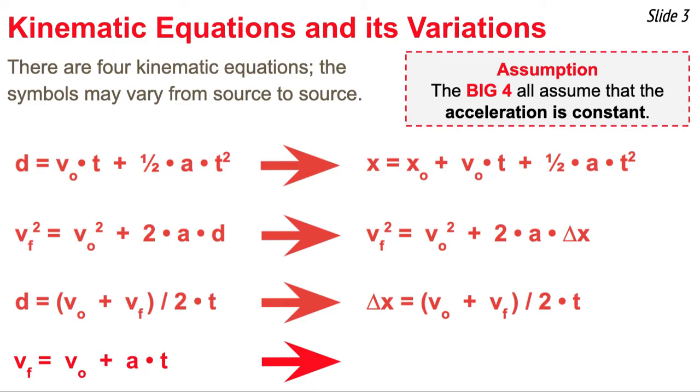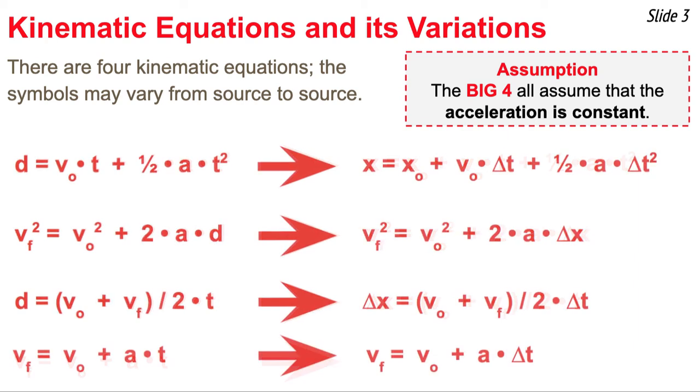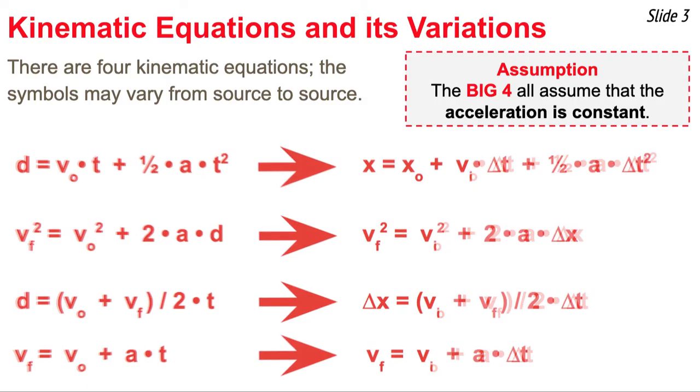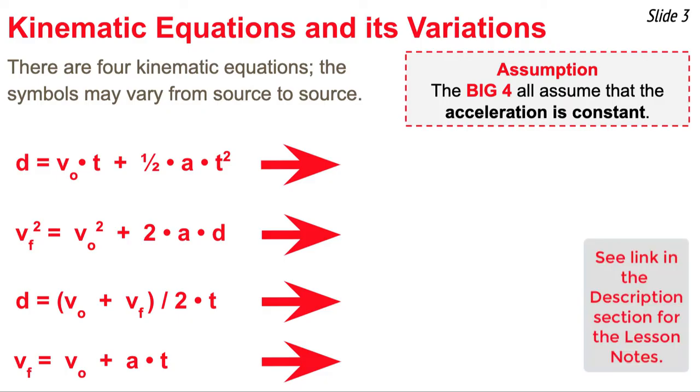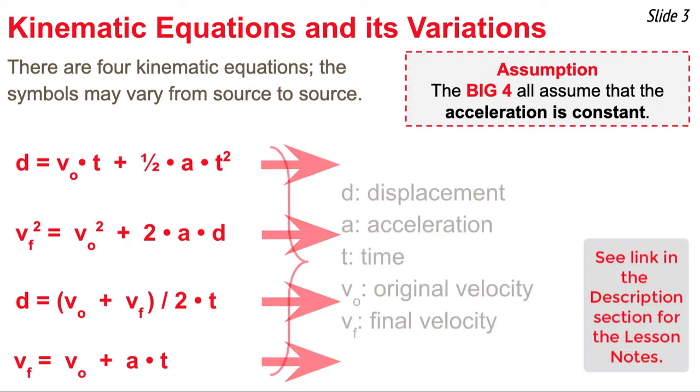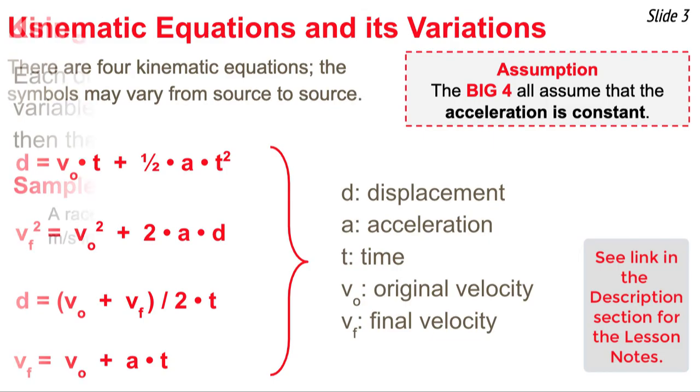Then there's the idea of time. I write it with a t. Other sources may write it with a delta t, meaning the time over which the motion takes place. And finally I use v subscripted o for v original velocity. Other sources may use v initial or vi. What you have to decide is what you're most comfortable with, but these are the symbols that I'll be using as I approach the problems and solve them using the big four.